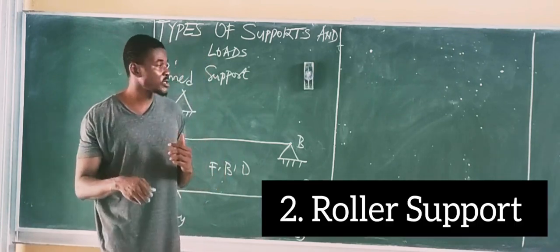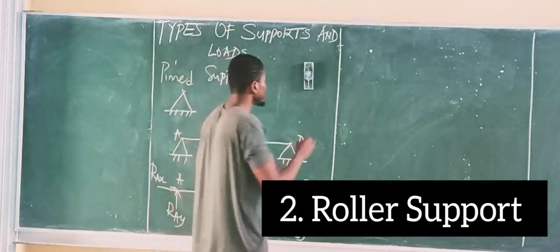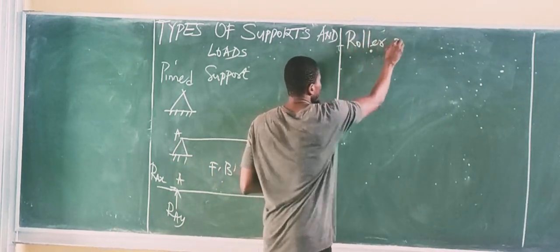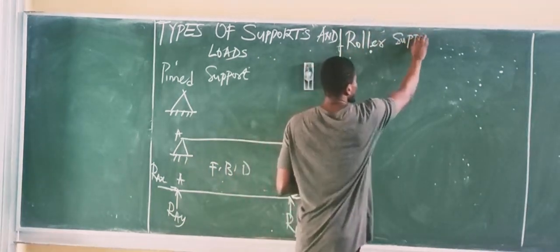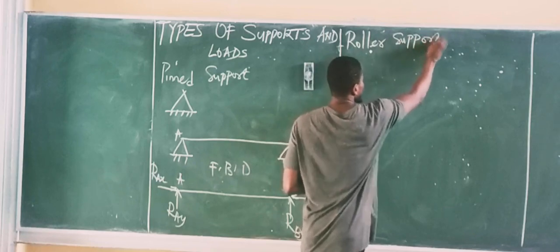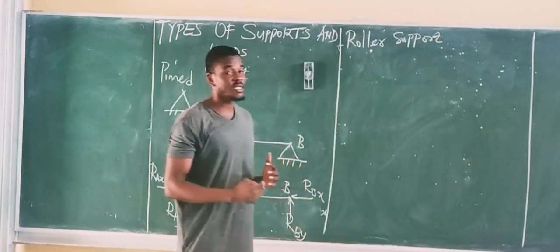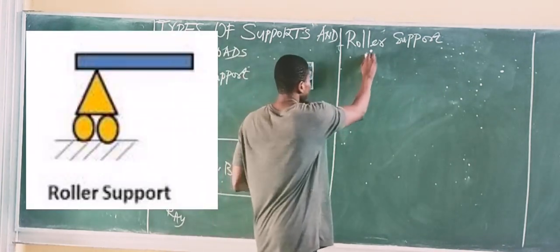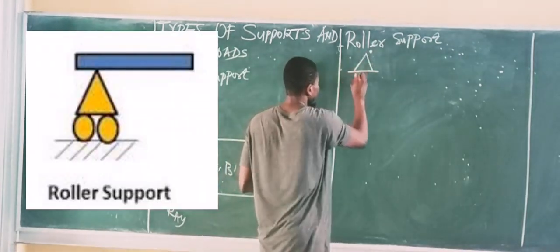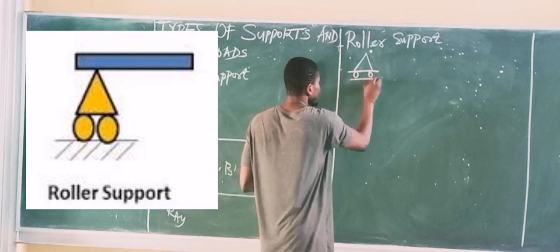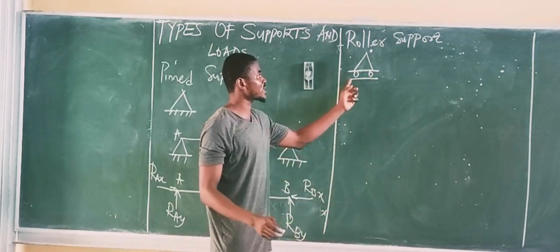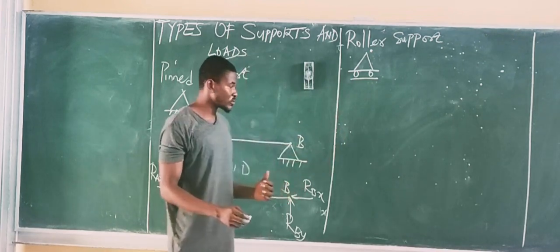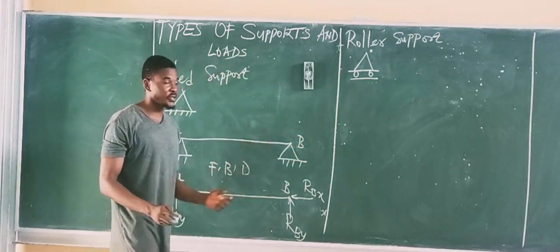Another support I will talk about is called the Roller Support. The Roller Support actually has about two different forms. You can see a triangle with balls or holes — that is called a Roller Support. The circle is what differentiates the Roller Support from a Pinned Support.